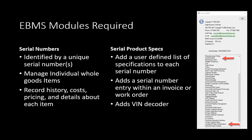The Serial Product Specs adds a serial number entry within an invoice or a work order, so a serialized item can be entered on the header of a task or invoice and associated with the serial number using that field. The Serial Product Specs also includes the VIN decoder, which we are discussing here today.